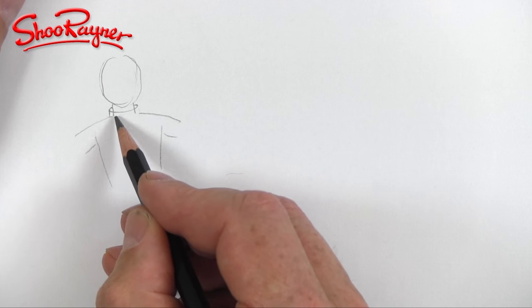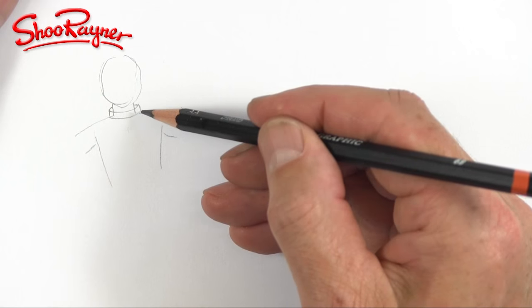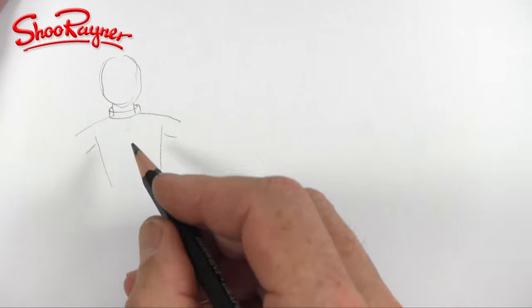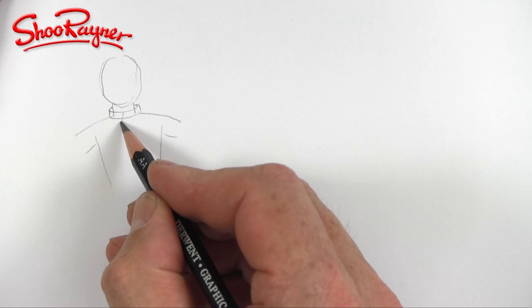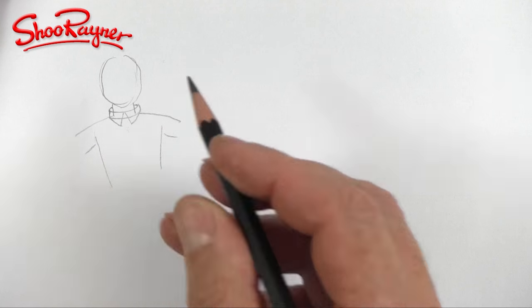Imagine an ellipse going there and an ellipse going there and this is kind of a bit like a vicar or a priest's collar but that's not quite how we want it. So we want it to split with a V.